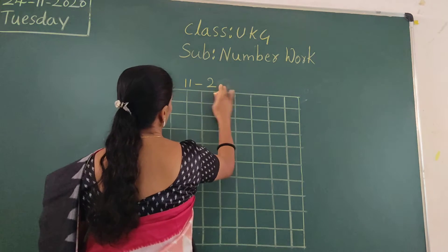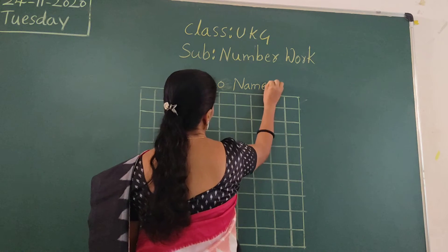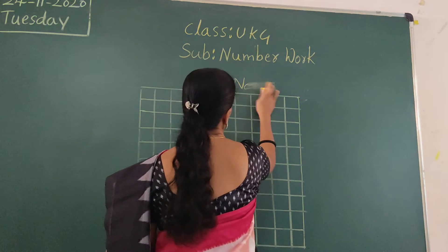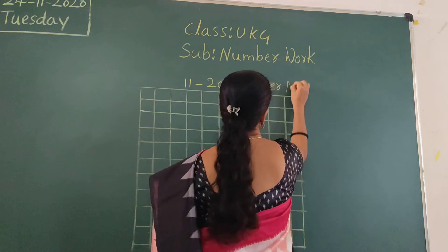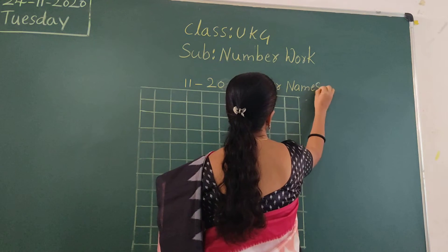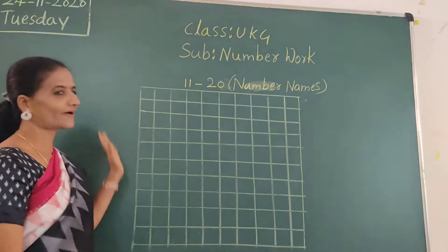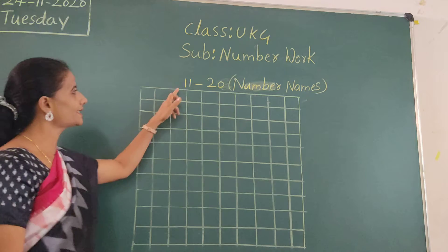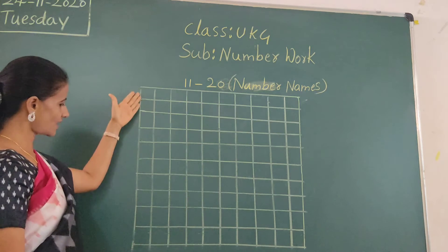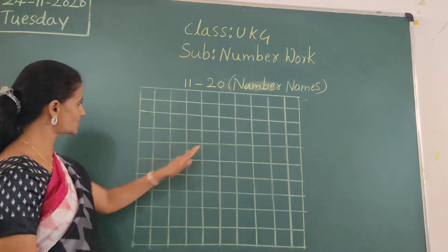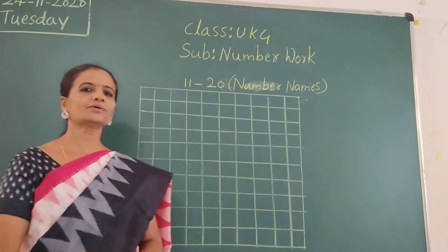Once we will revise number names. Right children, take out your number 1 squared book. Write the heading: 11 to 20 number names, in bracket number names. Same as it is in your book. We have to write one letter in each box, one letter per box.